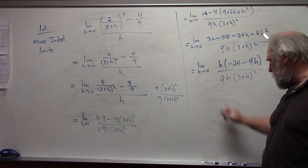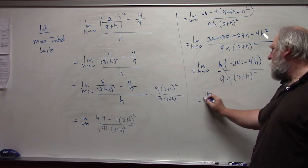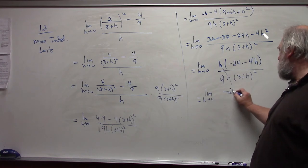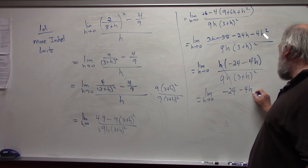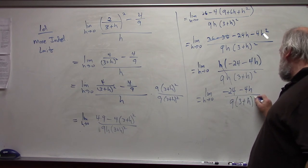The h's can reduce. I'm left with limit h approaches 0, negative 24 minus 4h over 9 times 3 plus h quantity squared.